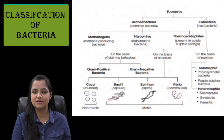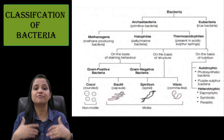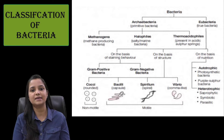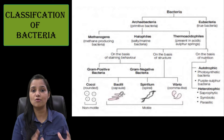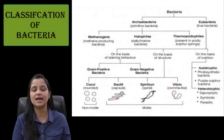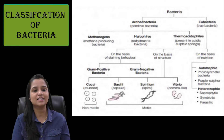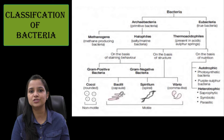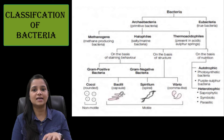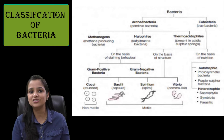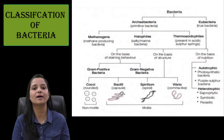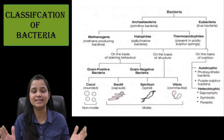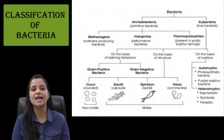On the basis of structure, it is further divided into four main types. The first one is the cocci, that is the round-shaped bacteria and it is non-motile. The next one is the bacilli, that is the capsule shape. After that, the spirulam, that is a spiral shape. And the next one is the vibrio, that is the comma-like shape. These three are motile.